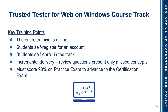This brings us to the Trusted Tester for web on Windows course track. Key training points include the entire training is online. Students may self-register for an account and self-enroll in their track. There is incremental delivery. The review questions present only missed concepts, so as you work through the exam, you'll be presented with concepts you missed during training. You must score 90% on the practice exam to advance to the certification exam.